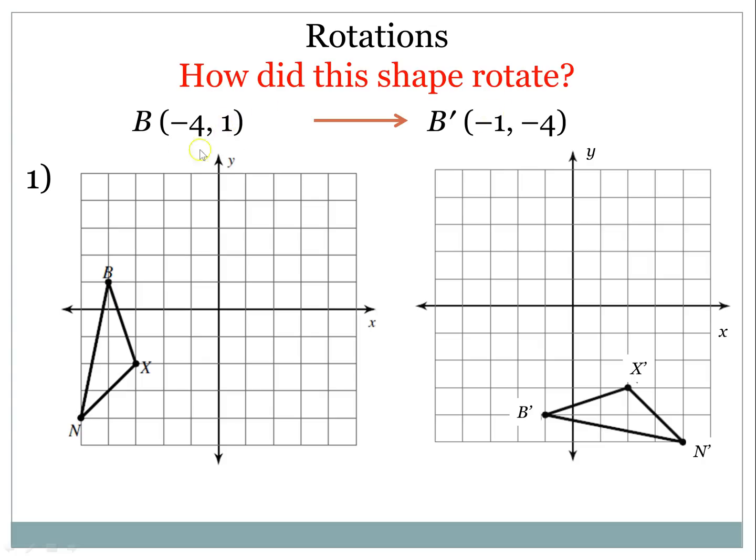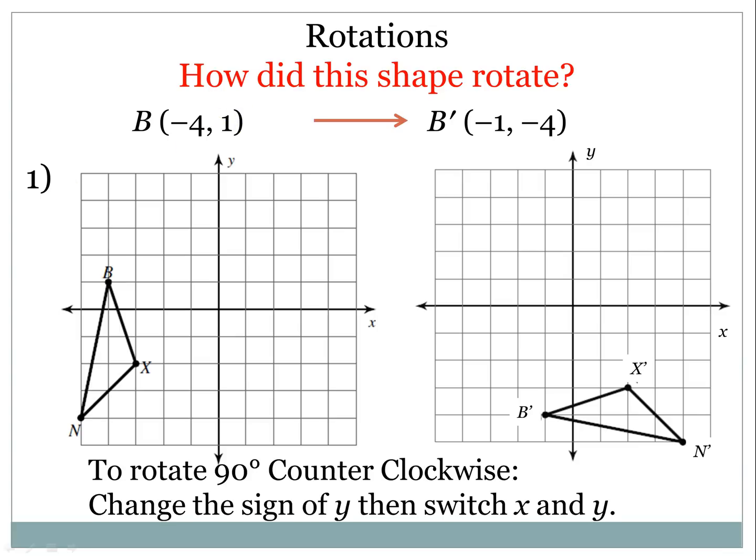The 1 also switched. So it looks like the sign of y changed, and then x and y traded places. And that's how you rotate 90 degrees counterclockwise. You change the sign of y, and then you switch x and y, and that's to rotate counterclockwise.